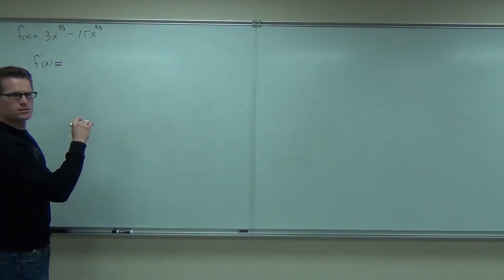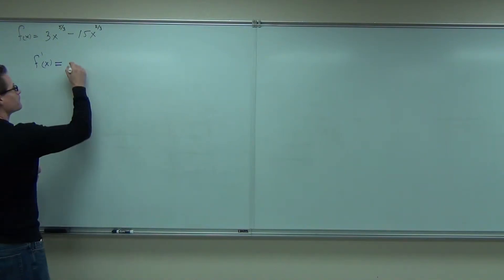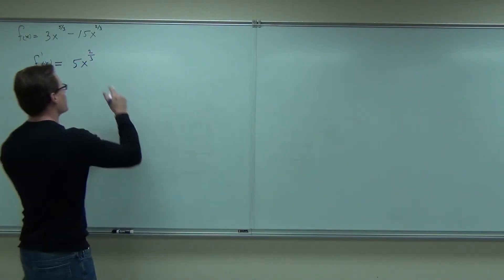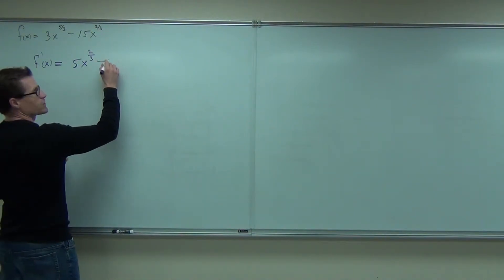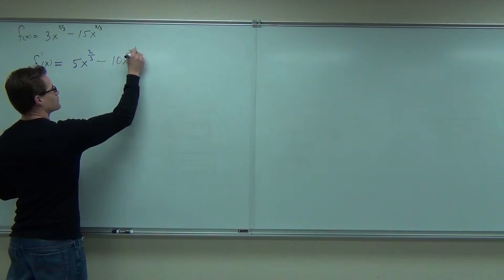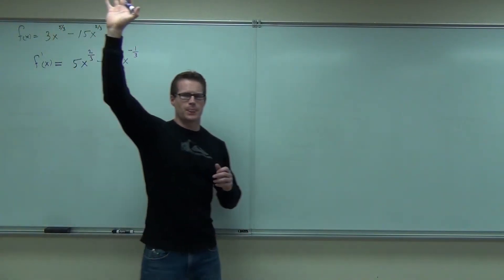So take your first derivative of that thing right there and set it equal to zero for me. Would you do that for me real quick? If you haven't done that already, go for it. What did you get? 5x to the 2 thirds minus 10x to the negative 1 third. 5x to the, you all got 5x to the 2 thirds? All right. Minus, you said what now? 10x to the negative 1 third. Show of hands, how many people got that? Good deal.